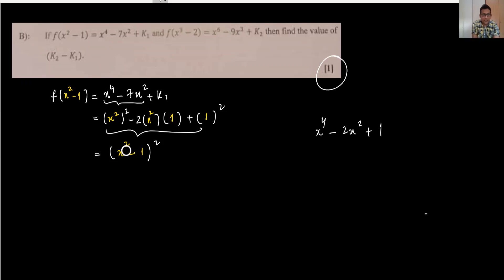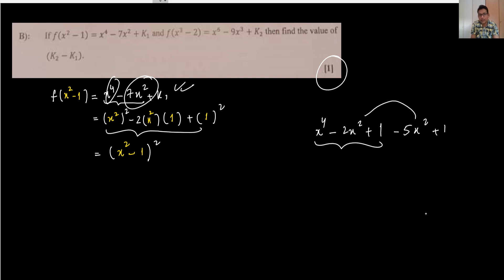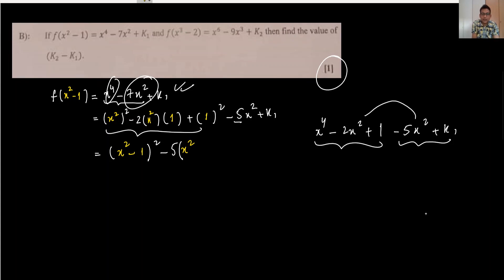Something is missing to match the target expression. We have x⁴ and -2x², but we need -7x². So we need an additional -5x². Writing this out: we factor -5 from the extra terms, giving -5(x² + k1/5).